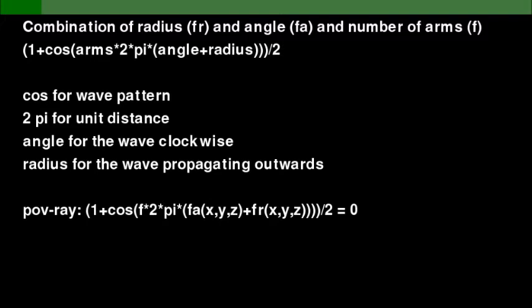There's another variable, which is an integer variable, and that's the arms argument. And the arms argument is the number of arms the spiral should have. The one makes the cosine go from zero to two, and the two at the end makes sure the value of the function is between zero and one. And at the bottom we see the implicit function as described in POV-Ray. Fa is the function for the angle, and r is the function for the radius.